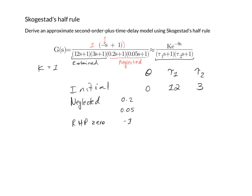The method specifies that the first neglected time constant is split evenly between the time delay and the smaller time constant. The remaining time constants are all added directly to the time delay.